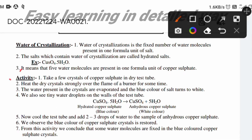Now observe the activity process. First, take a few crystals of copper sulfate in a dry boiling tube. Next, heat the dry crystals strongly over the flame of a Bunsen burner — or a candle — for some time.